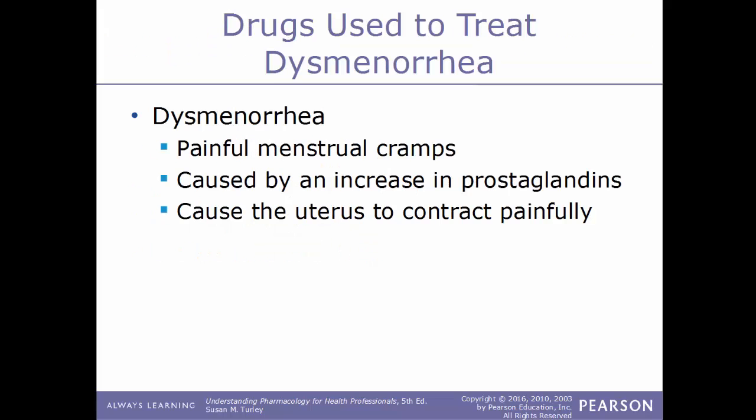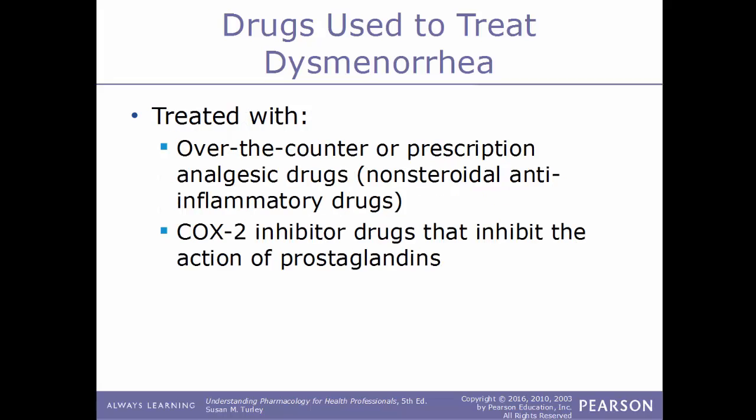Dysmenorrhea is having painful menstrual cramps, caused by an increase in prostaglandins that causes the uterus to contract very painfully. This condition is treated with either over-the-counter or prescription analgesic drugs such as NSAIDs, the non-steroidal anti-inflammatory drugs, or with COX-2 inhibitor drugs. These work by inhibiting the action of prostaglandins.